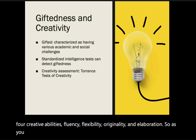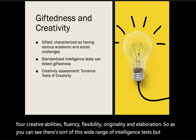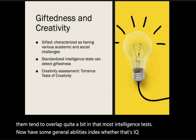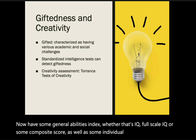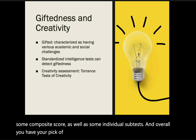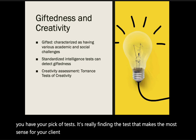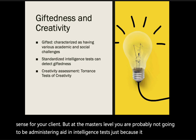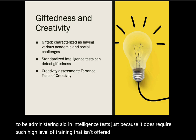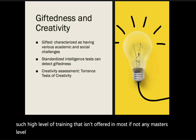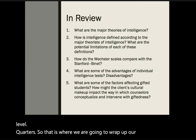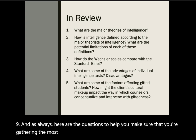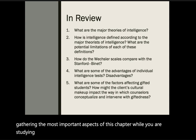As you can see, there is a wide range of intelligence tests, but most of them overlap quite a bit — nearly all now have some general abilities index, whether that is IQ, full-scale IQ, or a composite score, as well as individual subtests. At the master's level, you are probably not going to be administering an intelligence test, because doing so requires a level of training not offered in most master's level courses. That is where we will wrap up our lecture on Chapter 9. Study questions are provided to help you gather the most important aspects of this chapter.